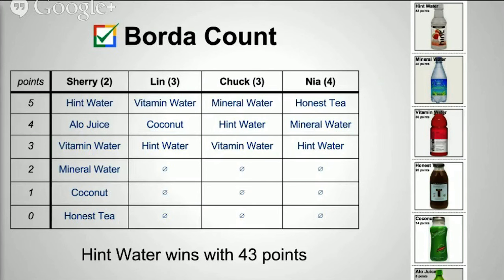The first algorithm we'll look at is Borda count. In the 1700s, Jean-Charles de Borda — a military officer, sailor, mathematician, physicist, and political scientist — popularized this algorithm. With six options we assign point values from 0 to 5, giving each person's ranking 0 to 5 points depending on their placement. We add it all up, and Hint Water wins with 43 points, a clear win over mineral water with 35 points.